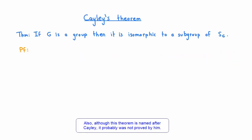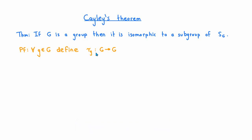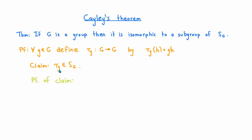We'll prove this theorem in two steps. For the first step, for each element little g of G, let's define a map τ_g from G to G by the rule that τ_g of h is equal to g times h for any h in G. I'd like to first establish that for any g, the map τ_g is an element of the symmetric group on G — that is, τ_g is a bijective map from G to itself. To show τ_g is in S_G, I need to prove it is both injective and surjective. Suppose h₁ and h₂ are two elements of G which get mapped to the same point by τ_g.